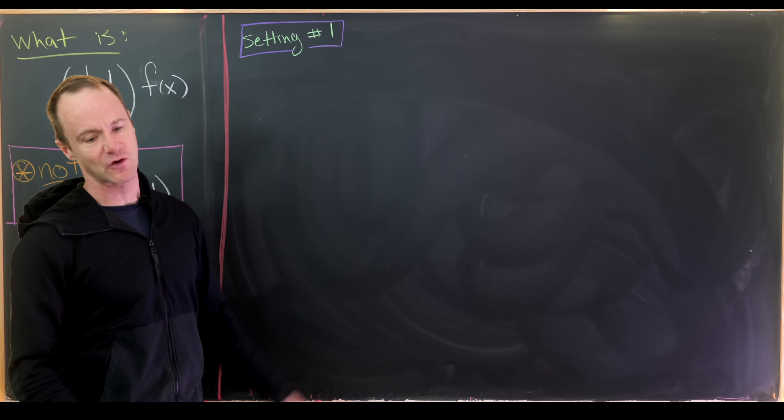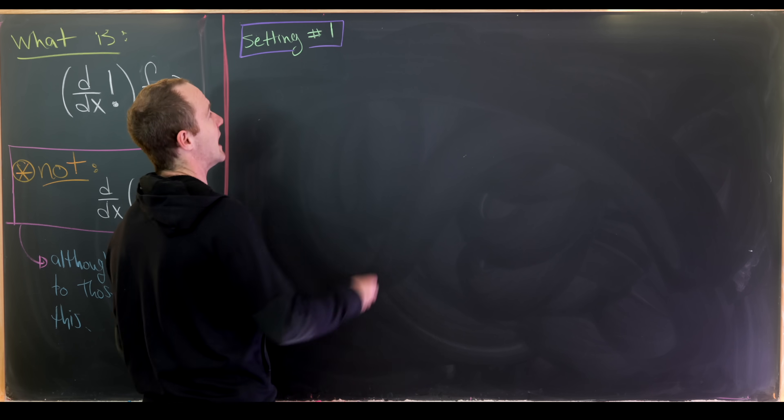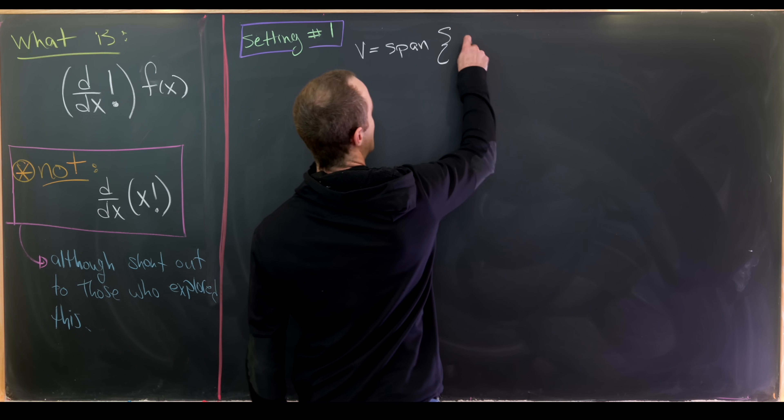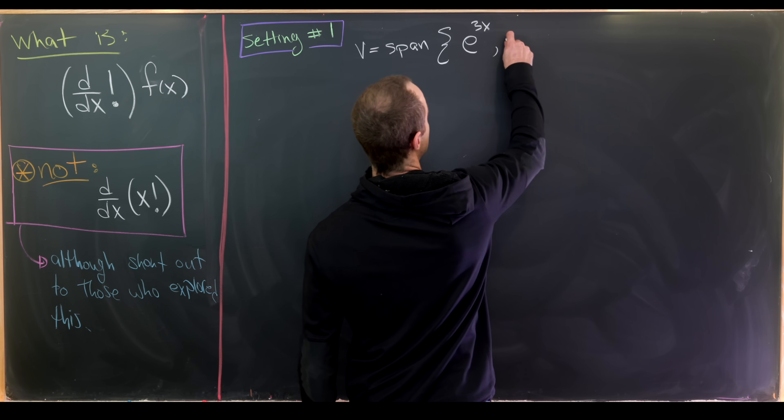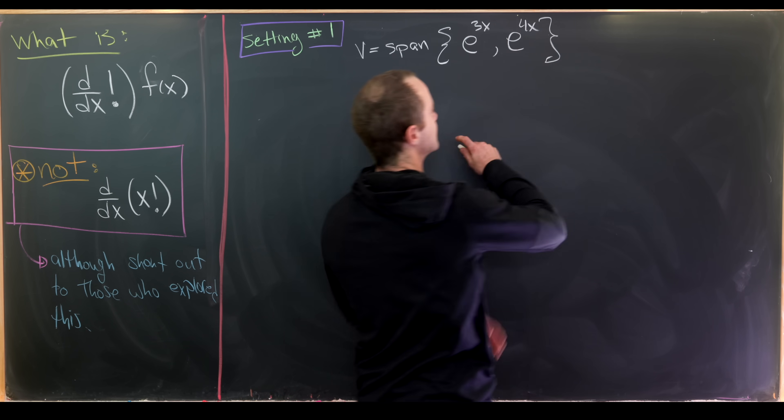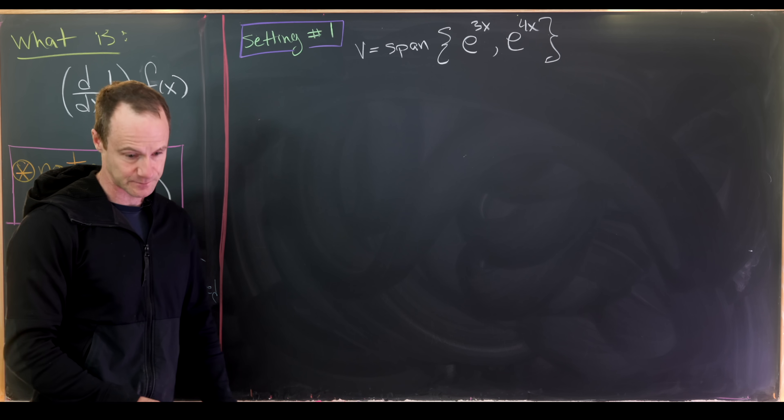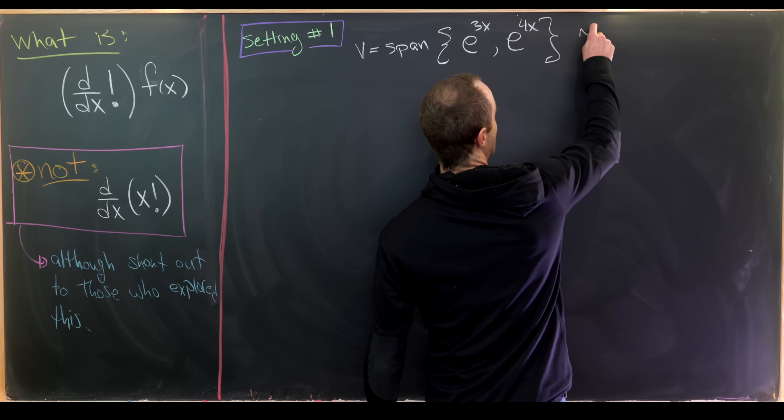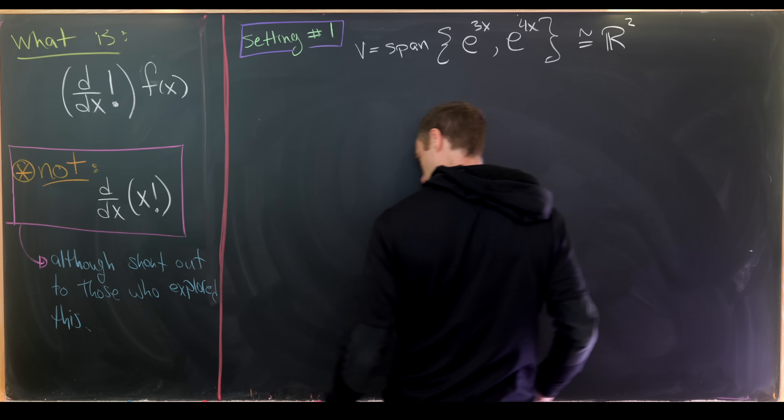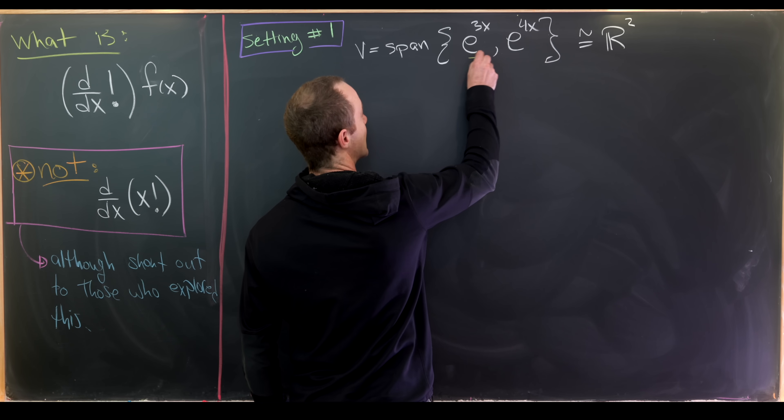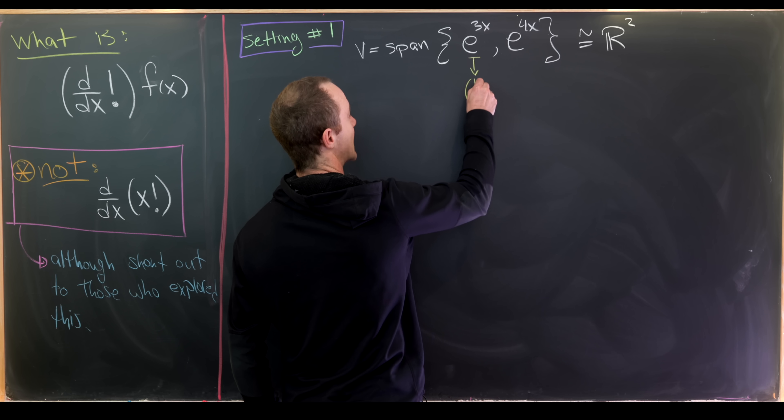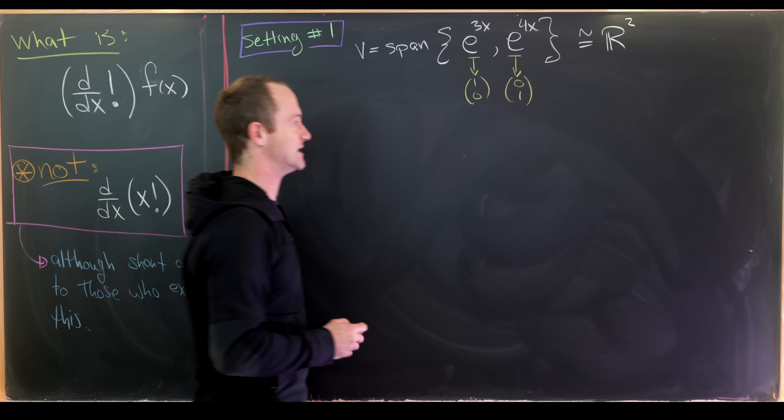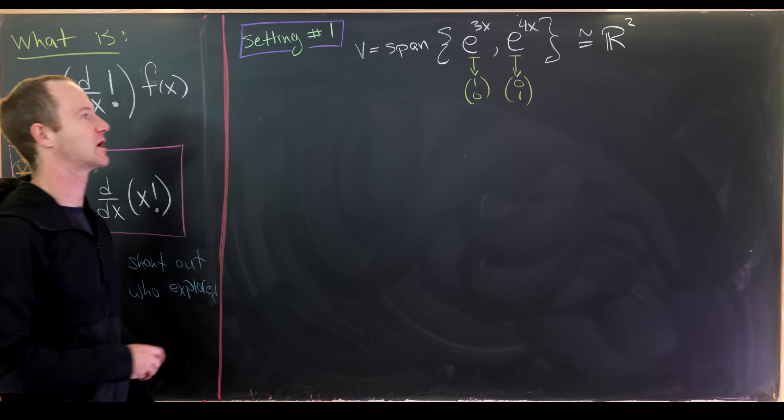Let's start with this first setting, which is fairly simple. We'll consider the vector space V, which will be the span of these two exponential functions, e to the 3x and e to the 4x. Although you could extend this so that it's quite a bit larger if you wanted to. And then we'll think about V as being an isomorphic vector space to R², and that isomorphism will be given by the assignment of e to the 3x with the column vector 1, 0 and e to the 4x with the column vector 0, 1. And then from there we'll build up a commutative diagram.